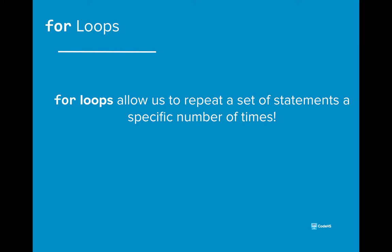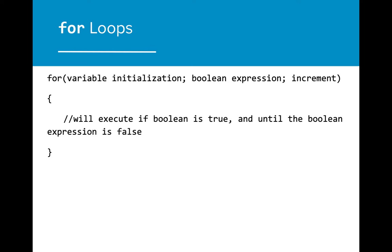For loops allow us to repeat a set of statements a specific number of times. Here is the general format of a for loop. For loops are made up of three components: the variable or initialization, a Boolean expression, and the increment. The code in a for loop will execute if the Boolean expression is true and will repeat until the Boolean expression is false.